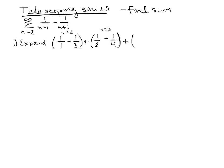Now at n equals 4: 1 over 4 minus 1 is 1 third, minus 1 over 4 plus 1 is 1 fifth. And for n equals 5: 1 over 5 minus 1 is 1 fourth, minus 1 over 5 plus 1 is 1 sixth. Now I look at what cancels — there's some stuff that cancels out of this.